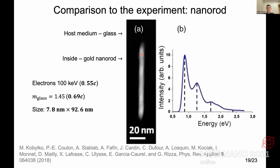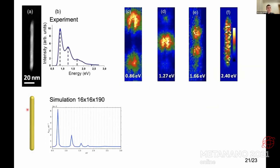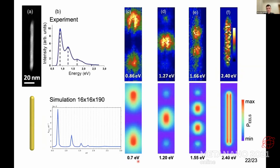This is another experiment — a gold nanorod from Kobilko et al. 2018, placed inside a glass (silicon oxide) substrate, where the electron speed is less than the speed of light in that medium. We simulated the nanorod as a perfect cylinder with hemispheres at both ends, computed the EELS spectrum averaged over the cross-section, and visualized four plasmon peaks. The four simulated plasmon maps are in excellent agreement with the experimental ones.